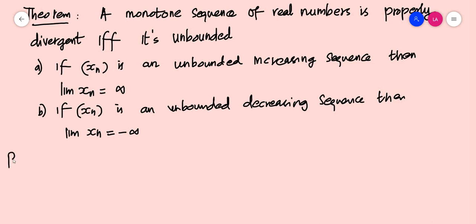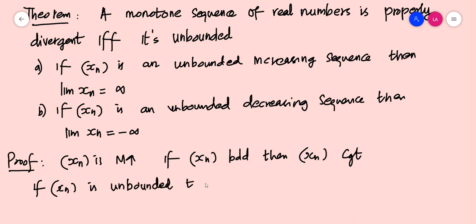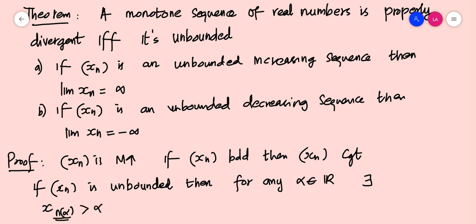The proof is very simple. Assume that XN is monotonic increasing. If XN is bounded, then by the Monotone Convergence Theorem, XN is convergent. So assume XN is unbounded. Then, for any alpha belonging to the real numbers, there exists a term XN_alpha which is greater than alpha.